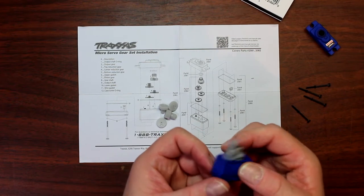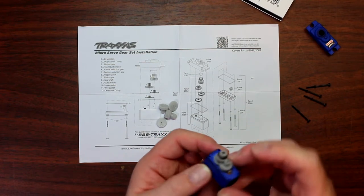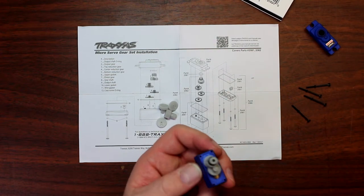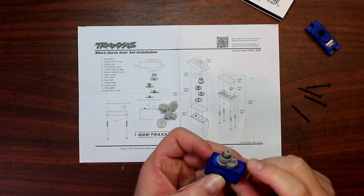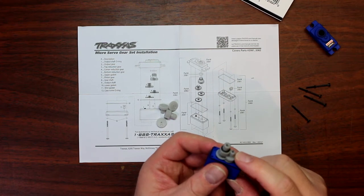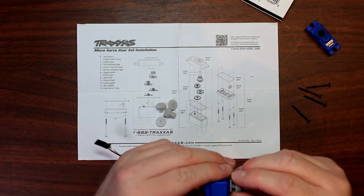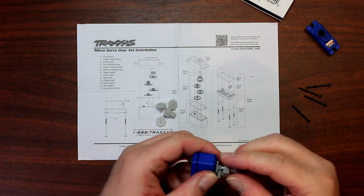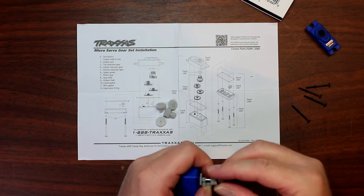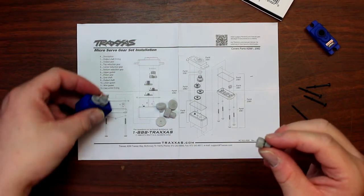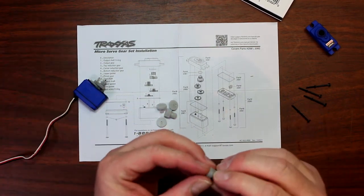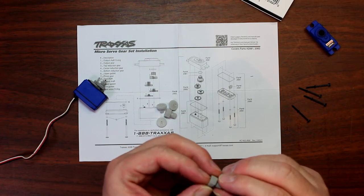Just take a look inside and determine which gear is damaged. What I'm seeing is the top reduction gear. Now we're going to remove the output gear and put this aside and just inspect it.